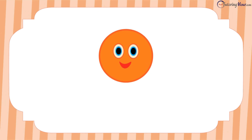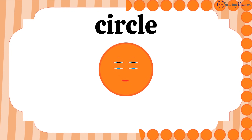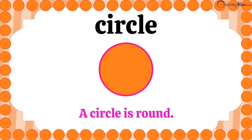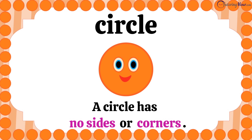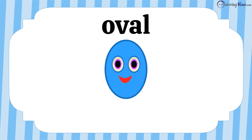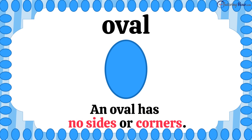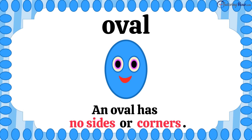Our next shape is a circle. A circle is round — it has no sides or corners. Our last shape is an oval. It has no sides or corners, just like the circle. It has a rounded and slightly elongated outline.